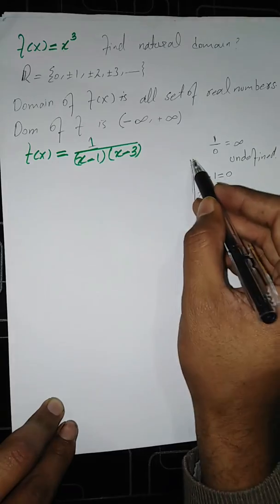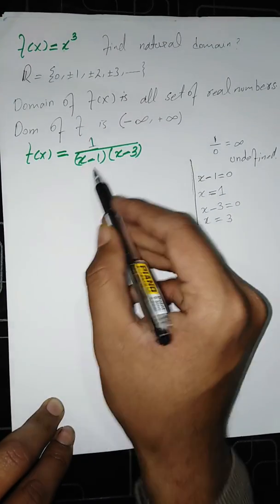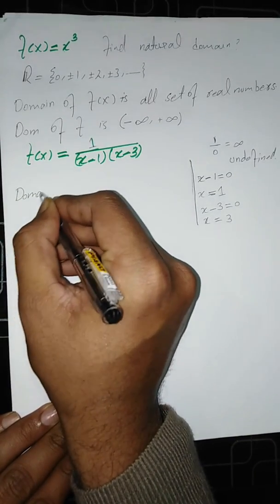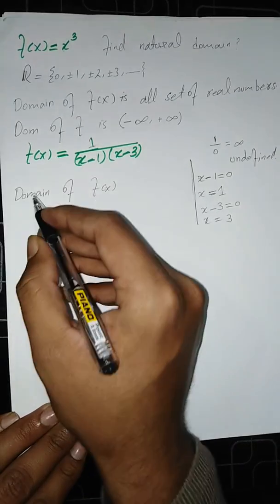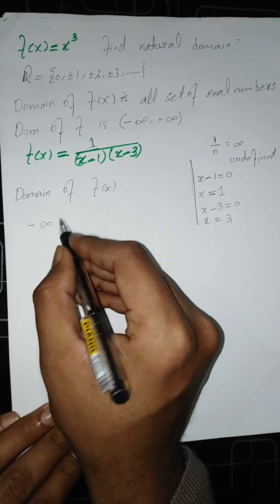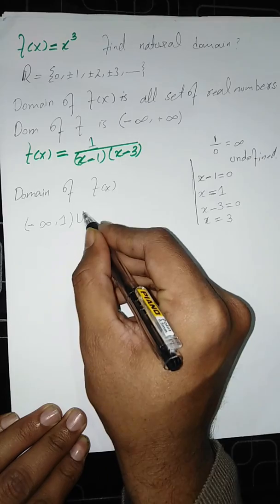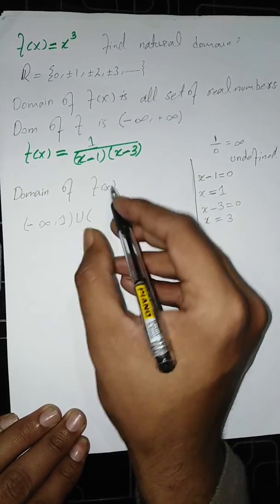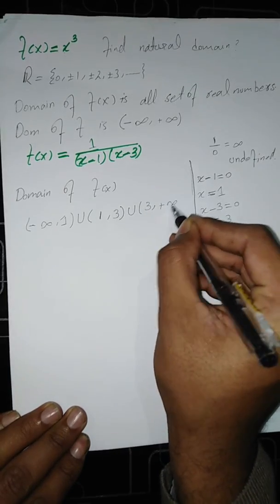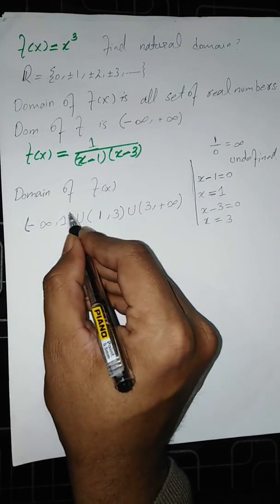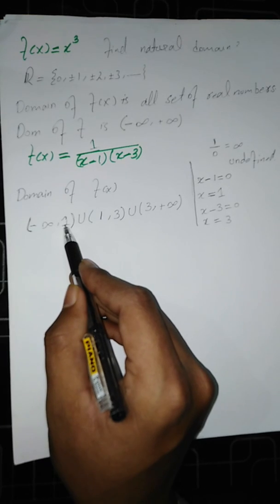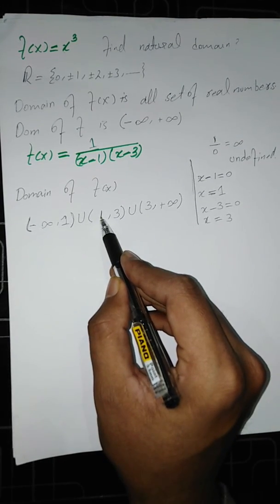We can input all values from the set of real numbers except 1 and 3. So the domain of f of x is written as the union of intervals: minus infinity to 1, union 1 to 3, union 3 to positive infinity, all in open intervals meaning 1 and 3 are not included.